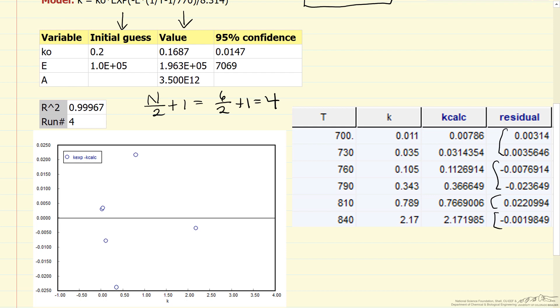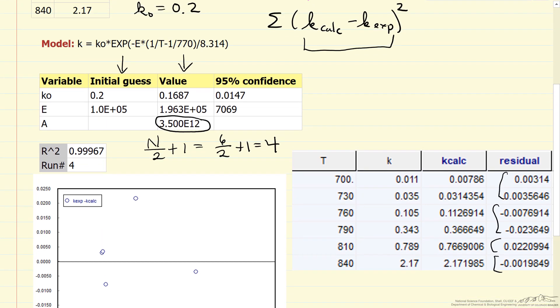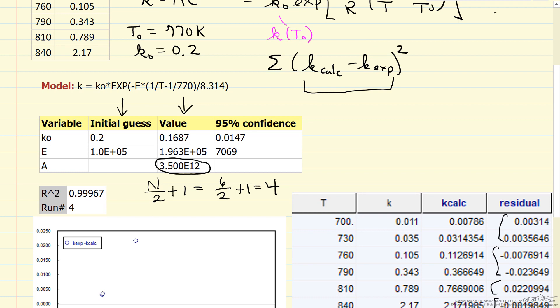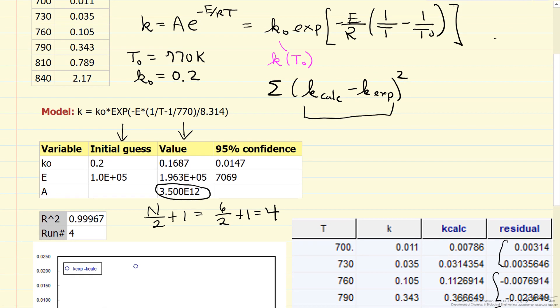We can then calculate A. We calculate A just by going back to our definition and we see A is going to be K zero, E exponent to R over T zero.